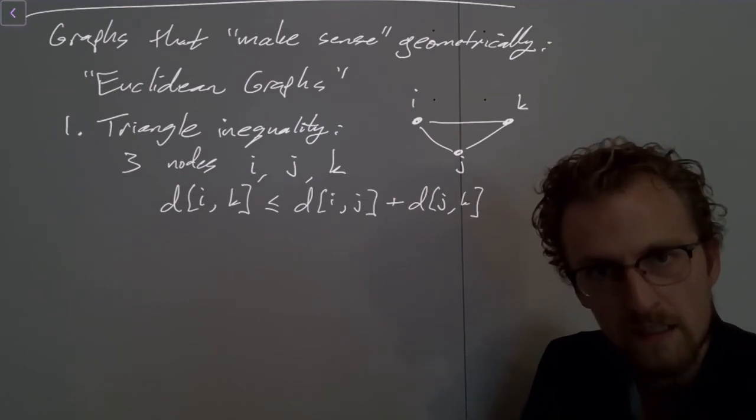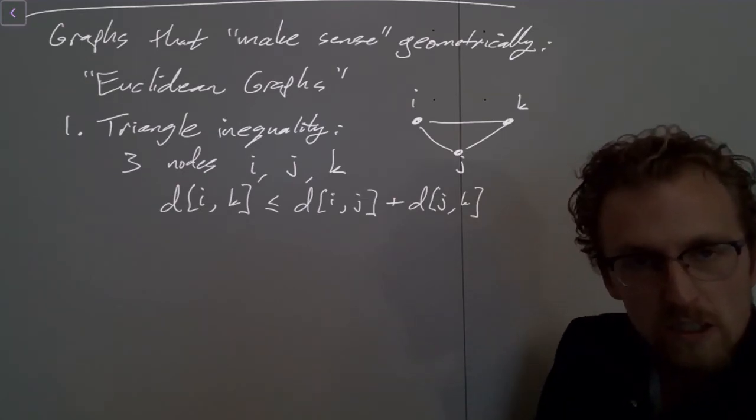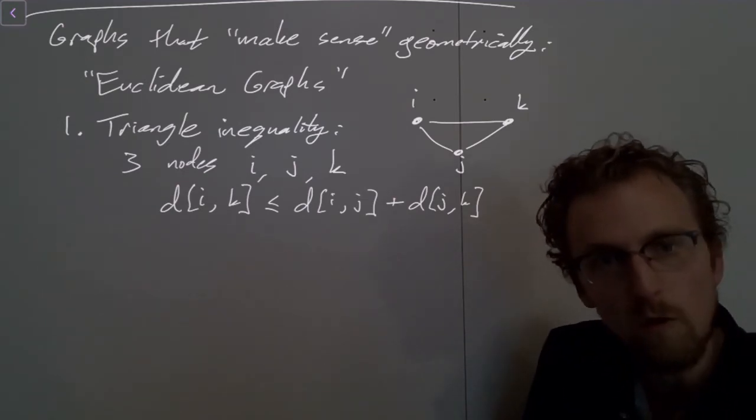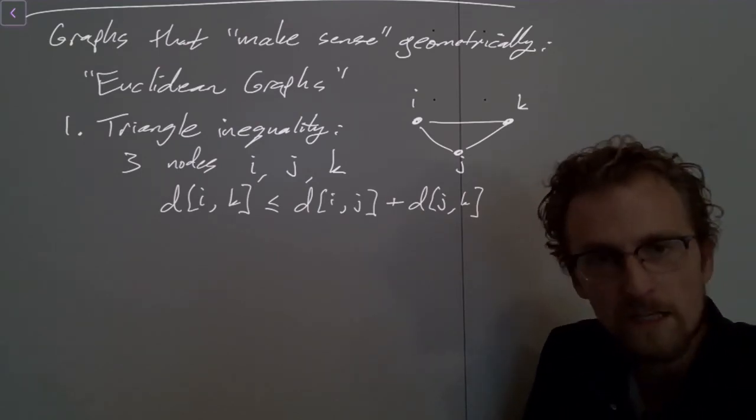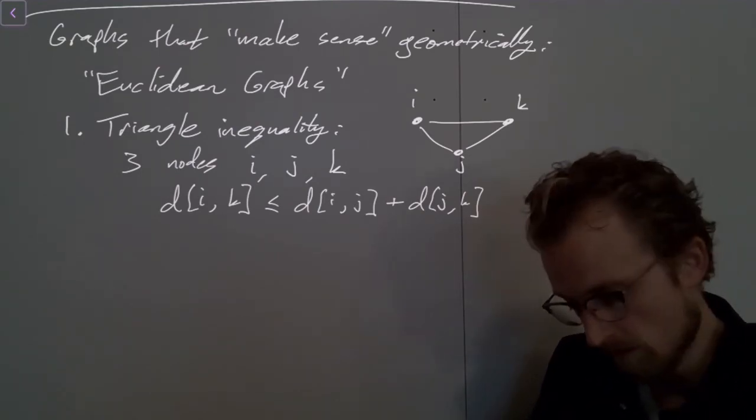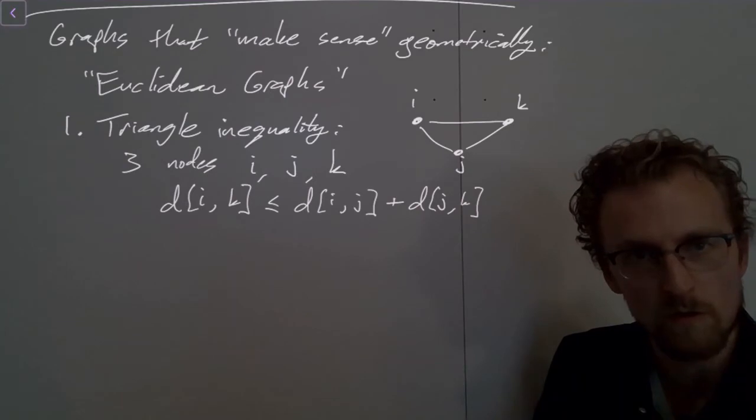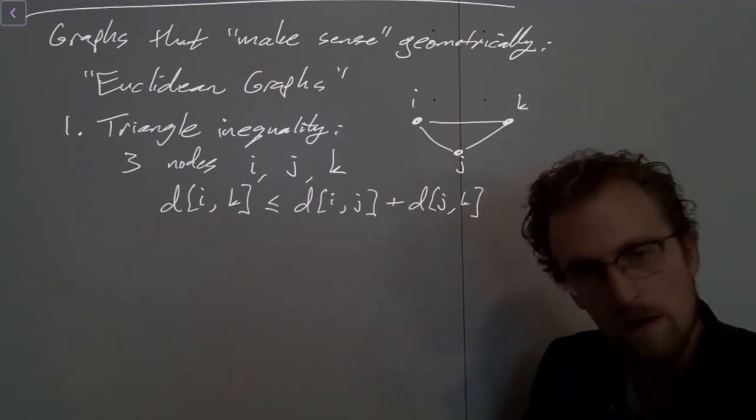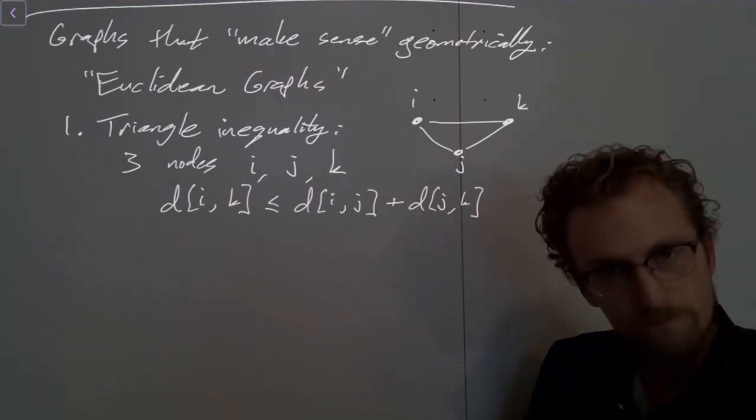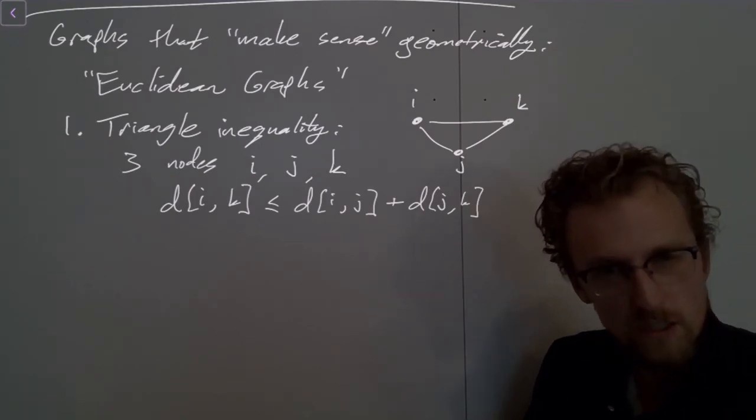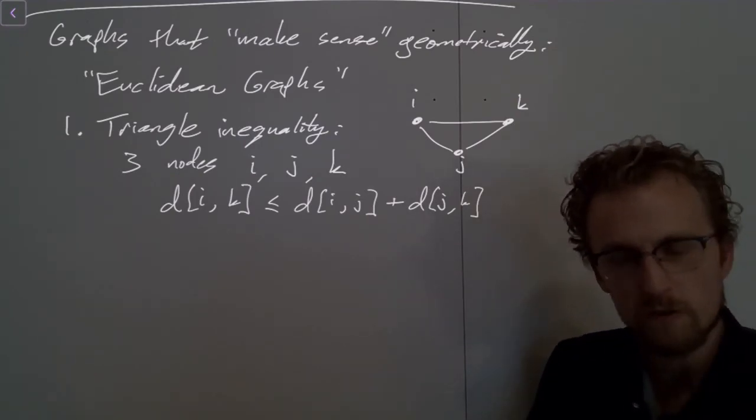And this is always going to be true if the distances correspond to straight line, or if the edge weights correspond to straight line distances between points. But it's actually broader than that. The triangle inequality is quite general. It applies to any norm. If you've run into norms or metrics or anything like this in math, but you can always think of it as these numbers have to correspond to something like straight line distances.